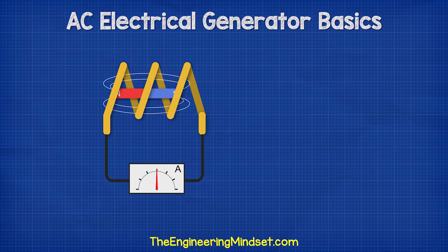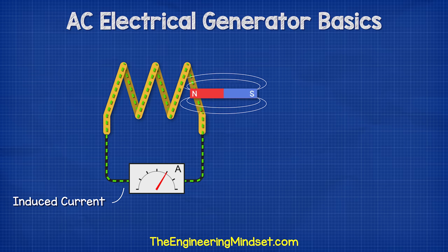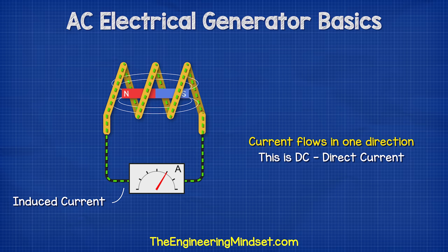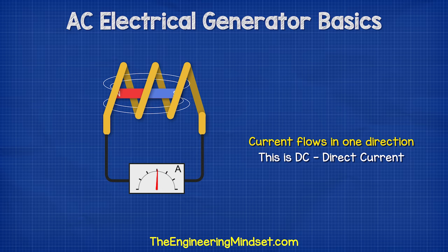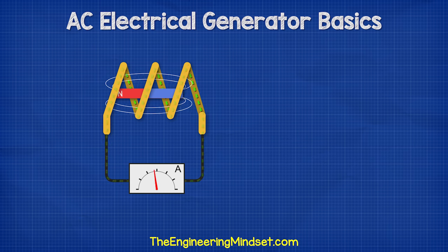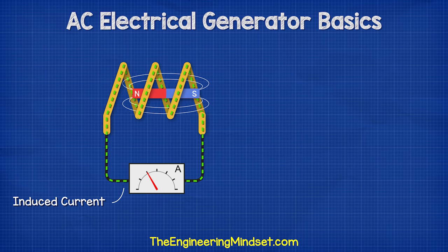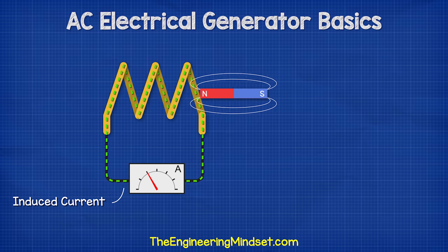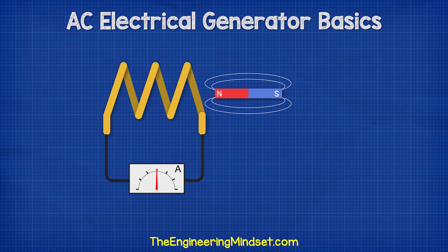The dial on the ammeter indicates a current flowing in the forward direction, therefore generating a DC or direct current. When the magnet stops moving, the dial returns to zero. When the magnet is moved in the opposite direction, the current flows in the opposite way and the dial indicates a reverse current.